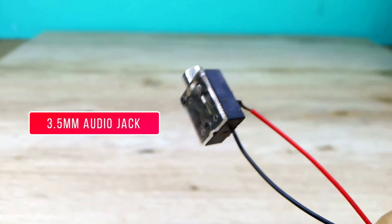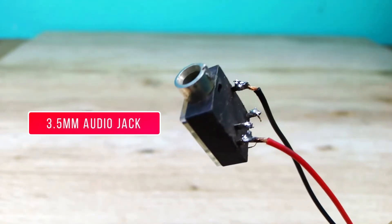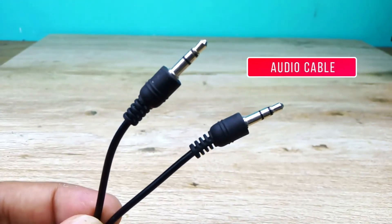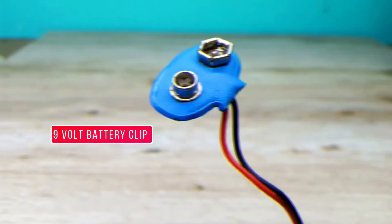This is a 3.5mm audio jack. This is the audio cable. This is a 9 volt battery clip. So let's make the circuit of the sound box.